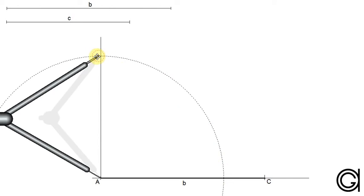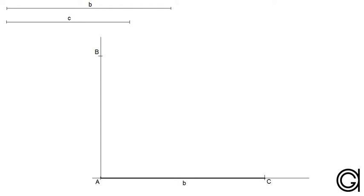...we scribe an arc to the left until it cuts the vertical line at our third vertex of the right angle triangle which we will call B.